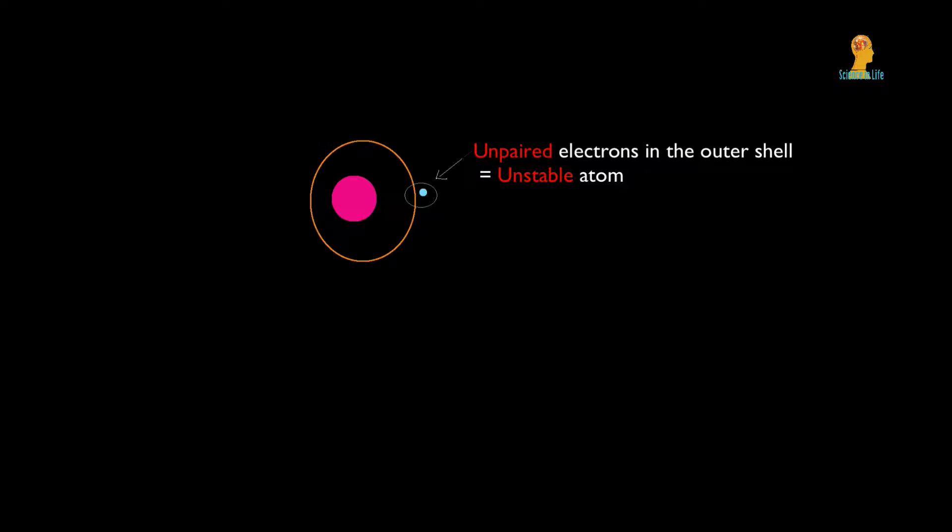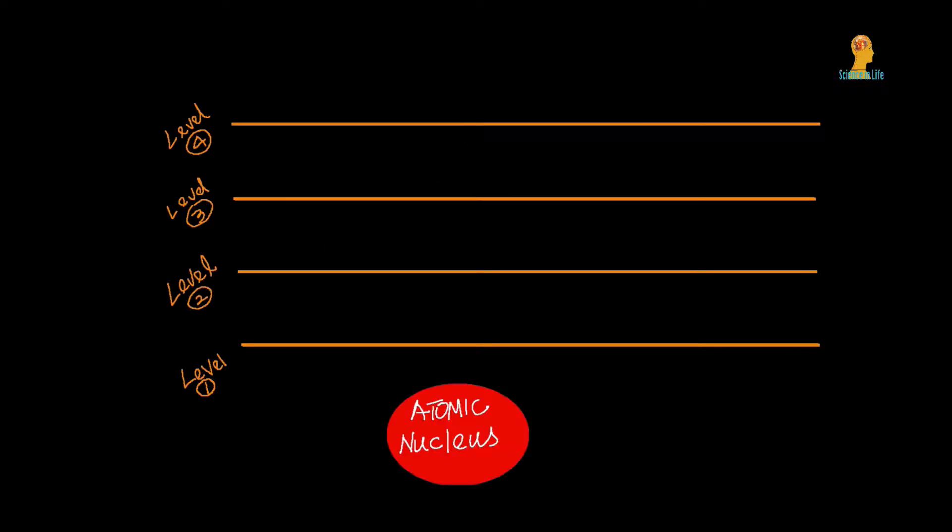Around the nucleus of an atom are the shells or energy levels. Each shell has sublevels. The first shell has one sublevel called S. S sublevel can have only one orbital with two electrons in it.